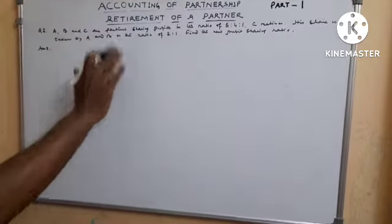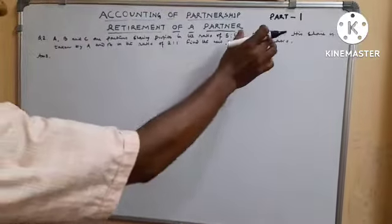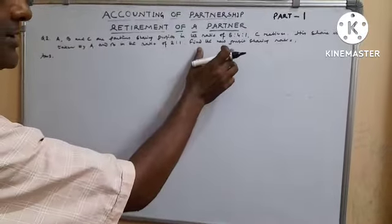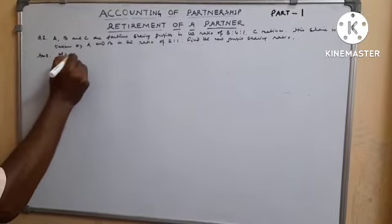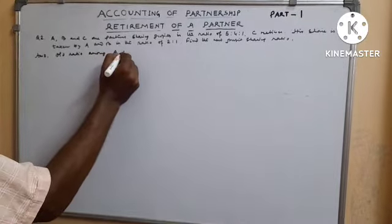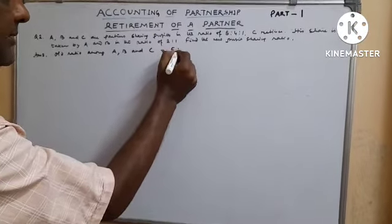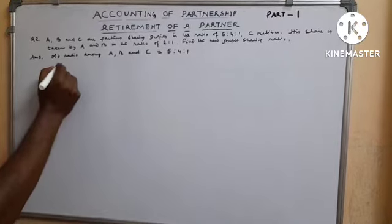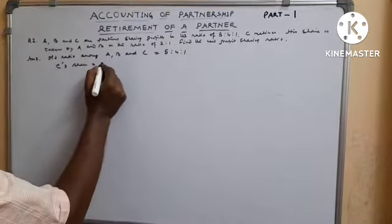A, B, and C are partners sharing profits in the ratio 5:4:1. C retires, with his share taken by A and B in the ratio 2:1. The question asks to find the new profit sharing ratio. Old ratio among A, B, and C equals 5:4:1. C's share equals 1/10.